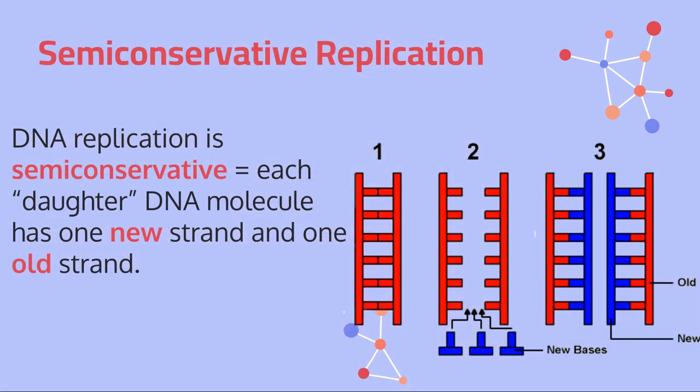One important thing to know about the whole process of DNA replication is that it is semi-conservative replication. This means each daughter DNA molecule has one new strand and one old strand. Think about the prefix 'semi,' which means halfway — so it's not a fully new strand and not a fully old strand. 'Conservative' tends to mean old, so semi-conservative means halfway old.